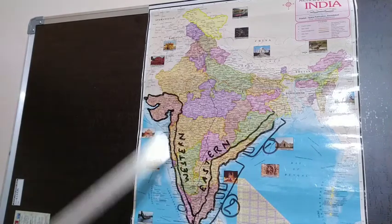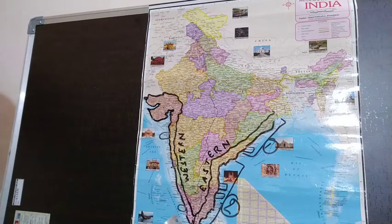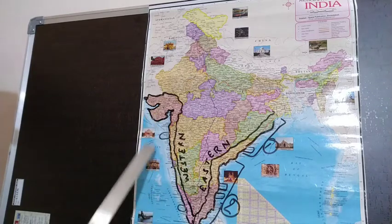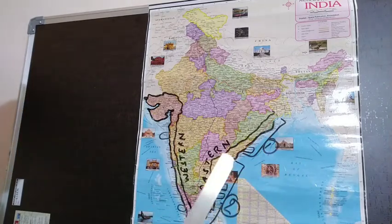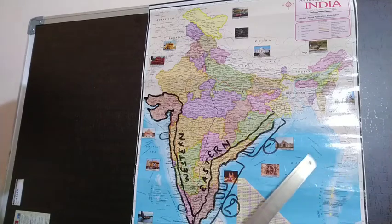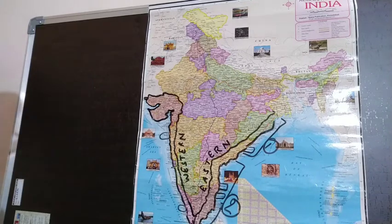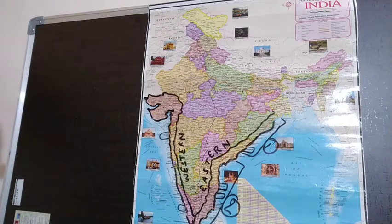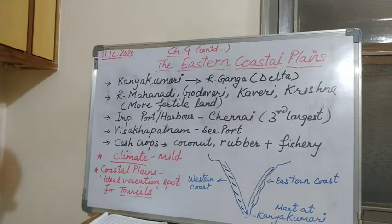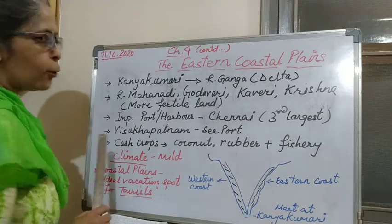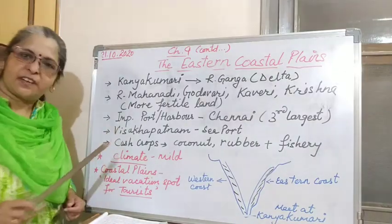Along with the coastal plains, India also has two important island groups. In the Arabian Sea on the western side we have the Lakshadweep Islands, and in the Bay of Bengal on the eastern side we have the Andaman and Nicobar Islands. With the help of the map you can understand both the coastal areas of India.